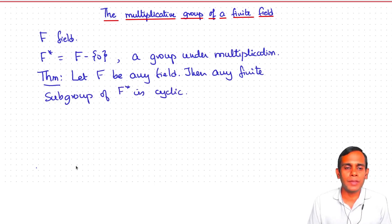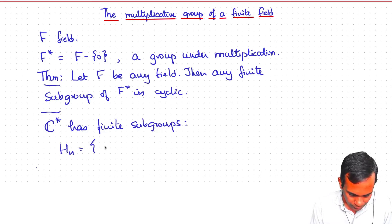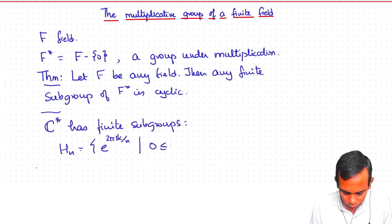Before we go to the proof, let me just give you some examples. If you take the complex numbers, then you look at C star. Then every finite subgroup of C star consists of H_n equal to e to the 2πik by n, where 0 lies between k, strictly less than n. These are the nth roots of unity.